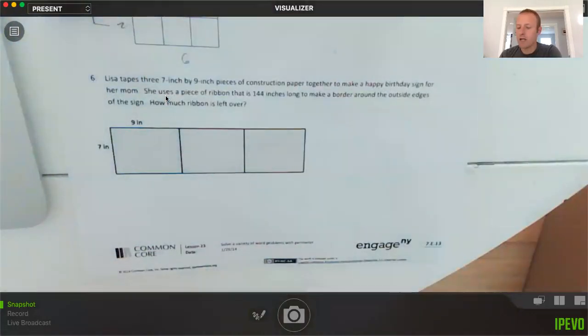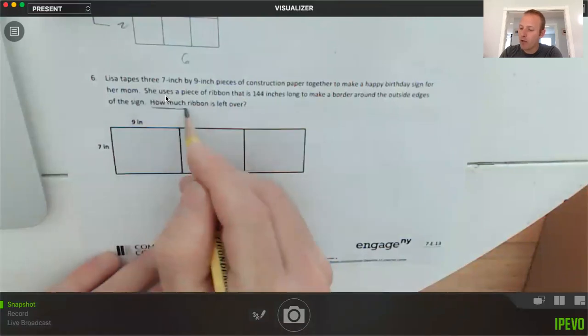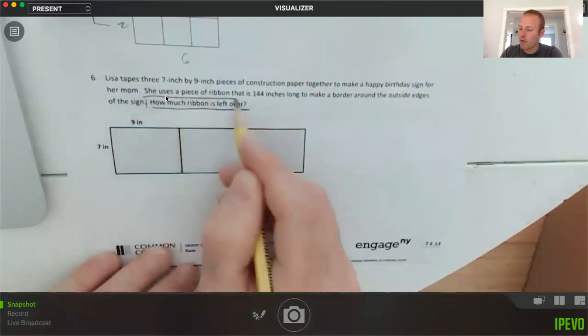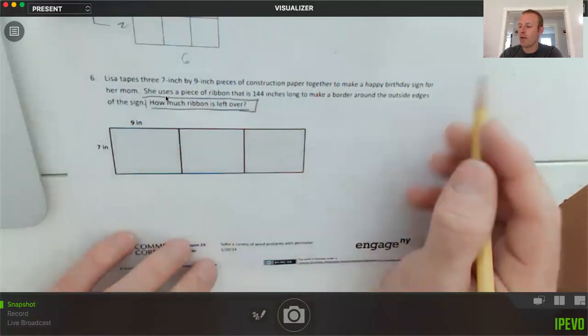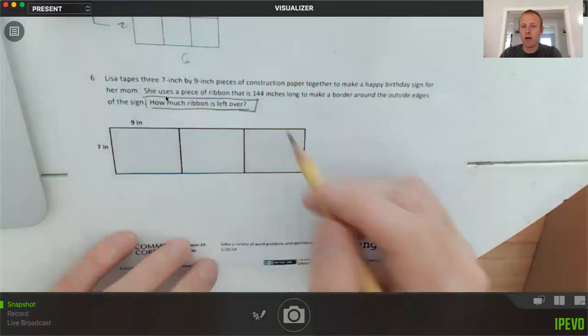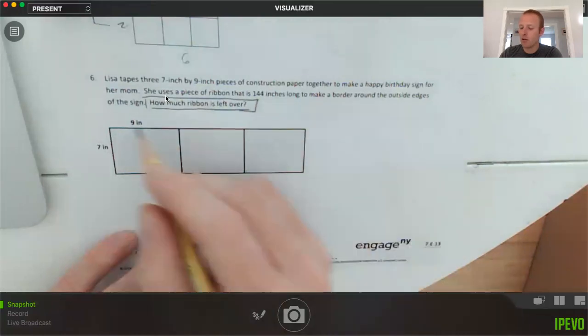Lisa tapes three seven by nine inch pieces of construction paper together to make a happy birthday sign for her mom. She uses a piece of ribbon that is 144 inches long to make a border around the outside edges of the sign. How much ribbon is left over? That is an interesting problem. This is a little different than any that we've done so far. So we're going to have to find the perimeter and then find the difference between 144 and the perimeter that we find.